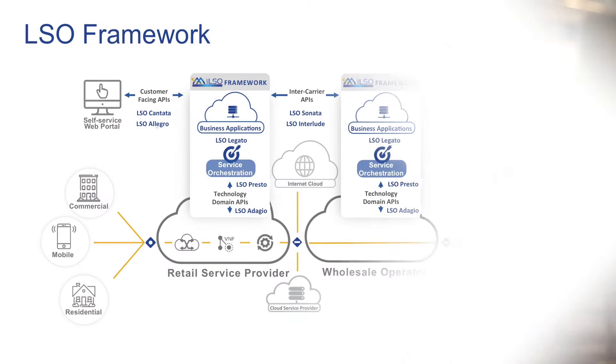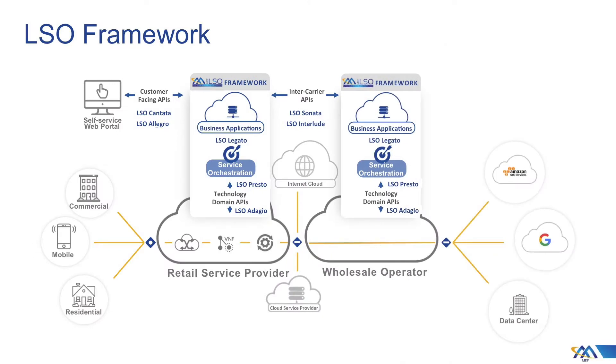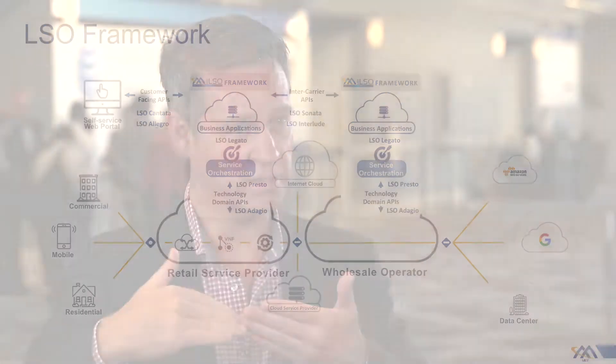Sonata, for example, is the interface reference point between a service provider and its partner. If I as a service provider am trying to give connectivity on a global scale, I can't reach everywhere in the world — but I can work with partners. I want to be able to turn up services in real time, know the real-time operational state of those services, do quoting, and do everything via a standardized API that is the same across all of my partners. The Sonata interface is the key to making that happen.